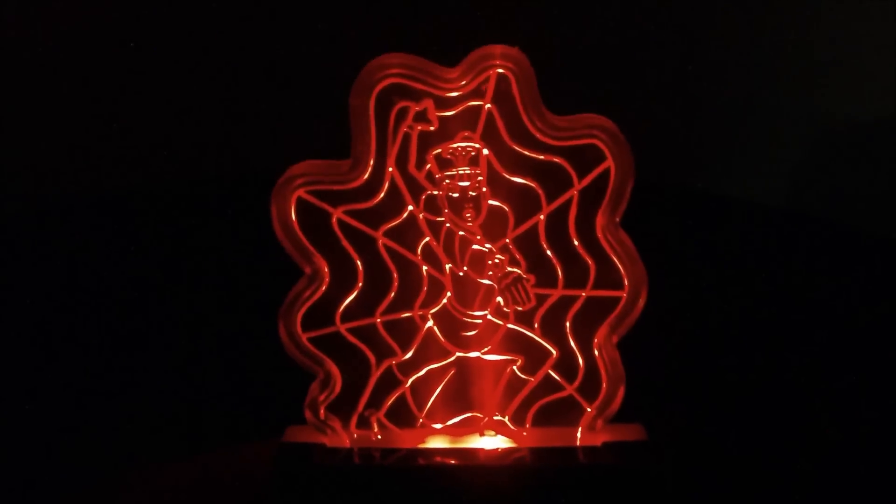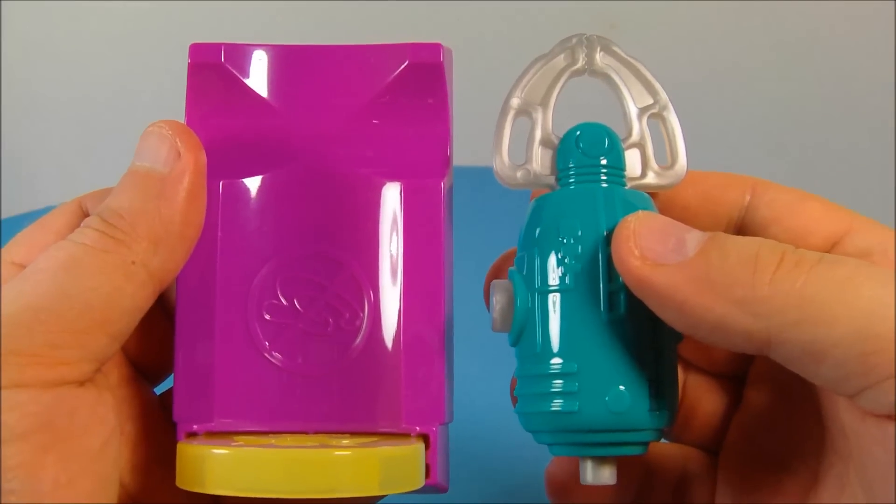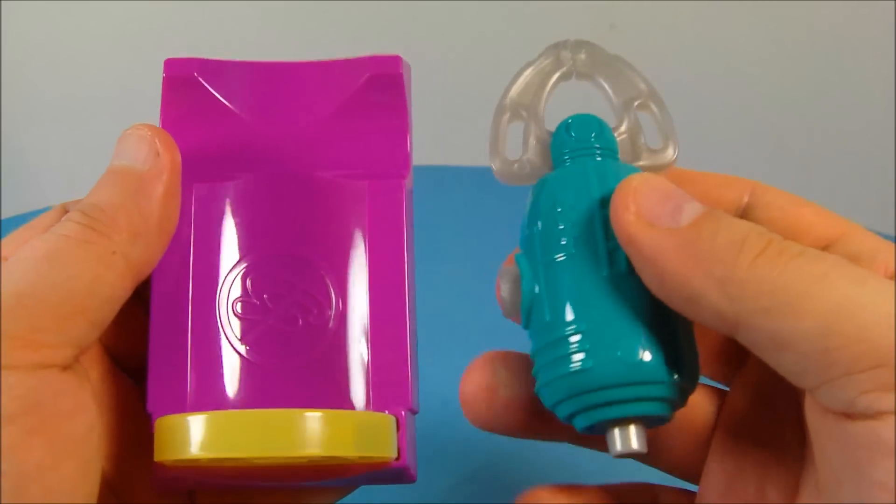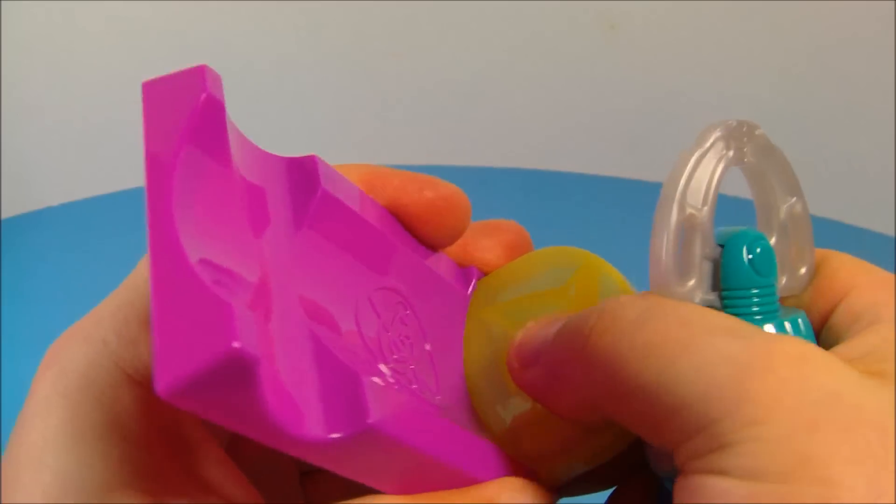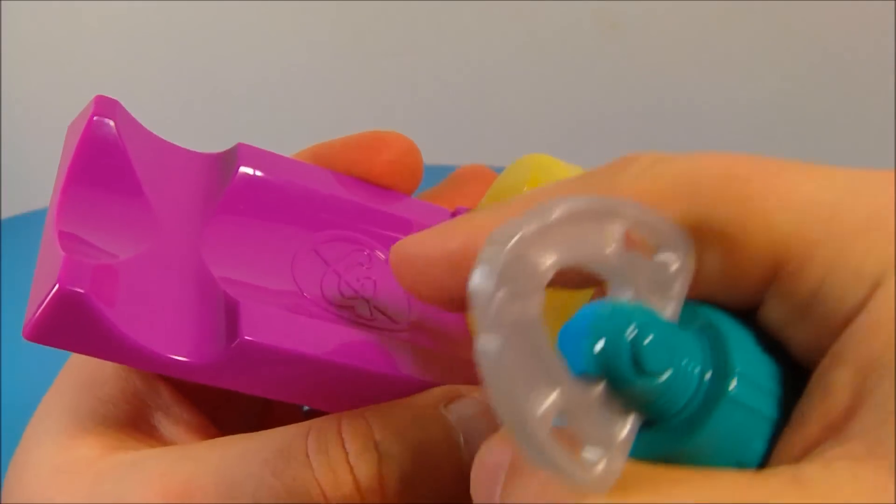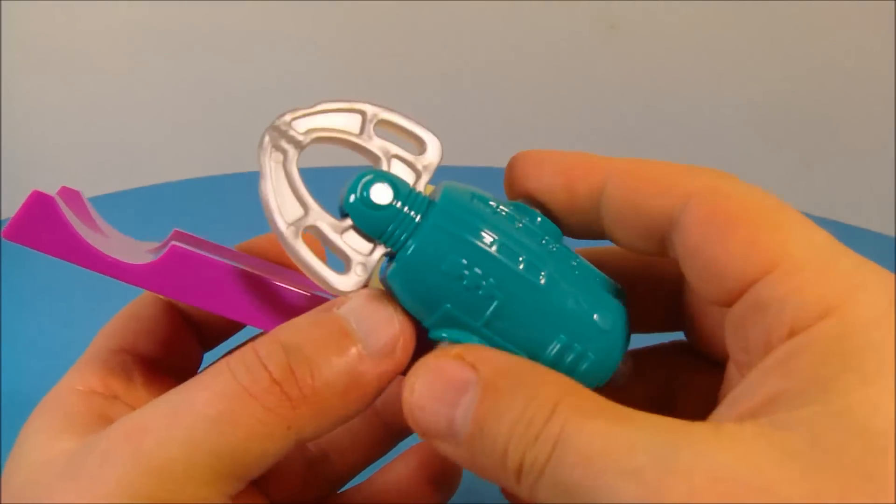Now this is one awesome looking toy. Last up at number six is Dr. Claw's Claw. Look at this thing. So it comes in three pieces - you take this yellow piece, you plug it into the purple base here, and then you have the claw itself with two buttons on either side here and they work as a pincher.